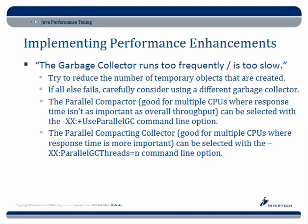We have the parallel compactor, which is good when you have multiple CPUs where response time isn't as important as overall throughput. You can select that using the command line option listed here — these are options you put in when you start up the JVM. The parallel compacting collector is good for multiple CPUs where response time is more important, and you can select that with the ergonomic listed here.